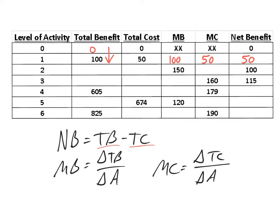The next row gets a little more complicated. We know that marginal benefit is 150, so that tells us total benefit must go up by 150, meaning this value is 250. We also know that net benefit is 100, so 250 minus what gives us 100 — that is 150. Once we put 150 in for total cost, we can solve for marginal cost: going from 50 to 150, that's 100, divided by the change in activity of one. So marginal cost is 100.